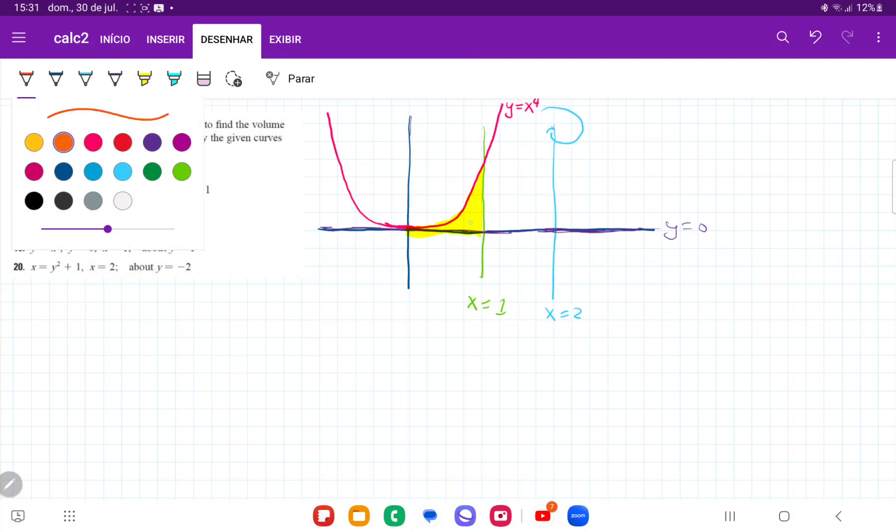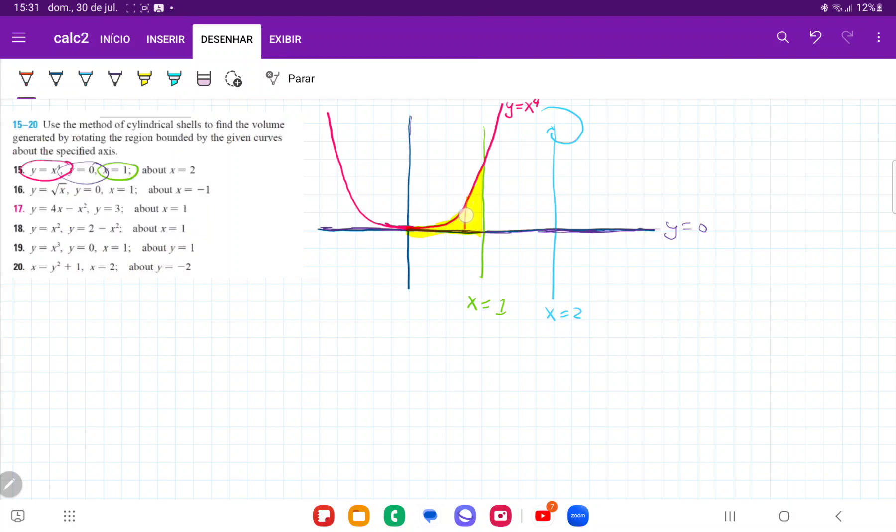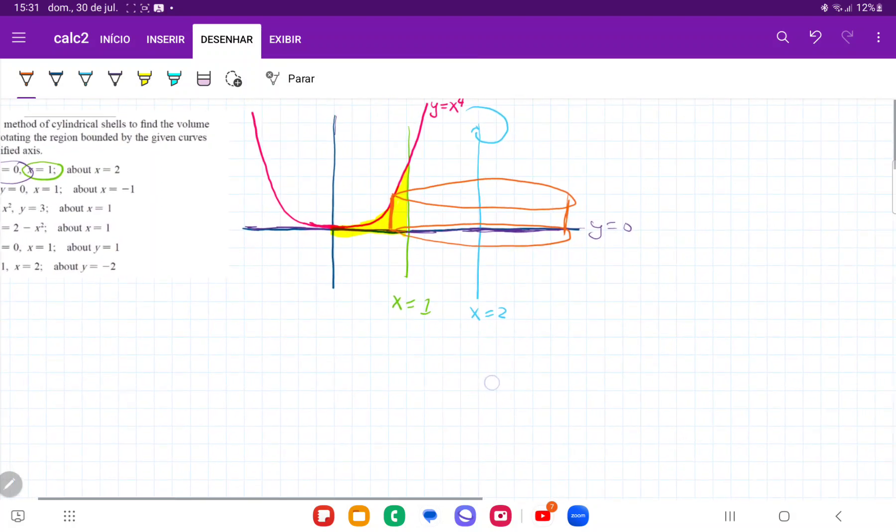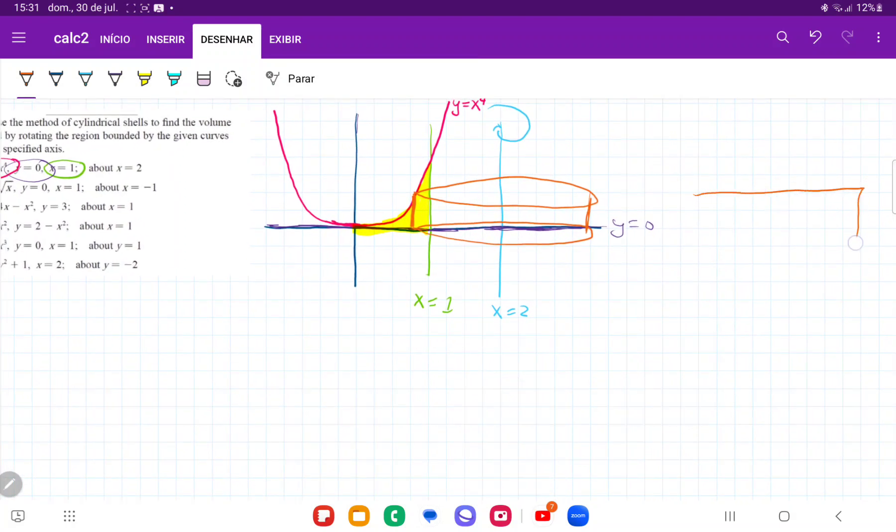So when I take this and I revolve it about the line x equals 2, what is going to happen is we're going to have a bunch of these cylinders that go like so. And so these cylinders, we can think of cutting them open and them being an infinitely thin sheet of paper that is wrapped around x equals 2. So we're going to have a bunch of these sheets that get wrapped around and then when we sum them up, they're going to give us a volume of all this whole area being revolved.